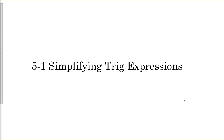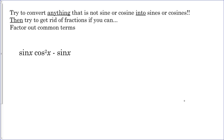In this video we're going to go over simplifying trig expressions. Remember an expression does not have an equal sign — an equation has an equal sign, an expression does not. To simplify trig expressions, the first thing you want to do is convert anything that is not sine or cosine into sines or cosines, then try to get rid of fractions if you can, and lastly factor out common terms.